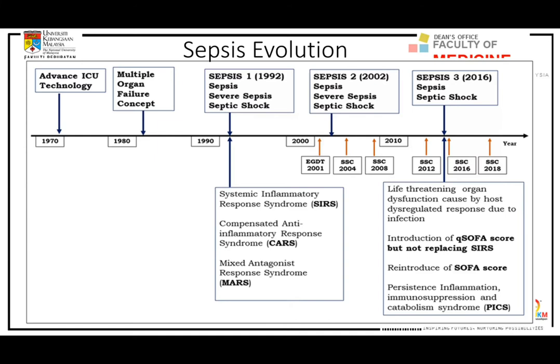In 1992, some inflammation syndromes were also introduced, such as SIRS criteria, CARS criteria, and MAS criteria. I have already explained these in a previous presentation — you can go back to the YouTube video I posted previously.